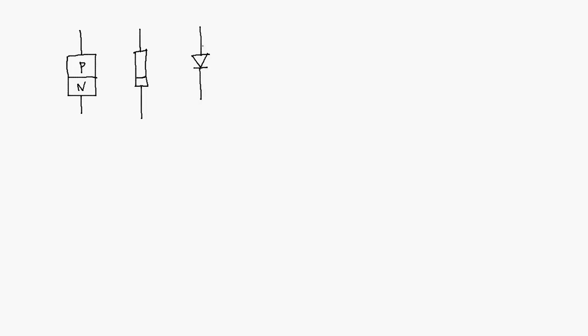The circuit symbol for a diode looks like this. This side of the circuit symbol represents the same side as this side of the actual diode and this side of the cartoon P-N junction representation. This side of the diode is called the anode, on the P-side material, and this side of the diode is called the cathode. The shape of the circuit symbol sort of represents the behavior of the diode, in that this is like an arrow pointing in this direction to indicate that conventional current is only allowed to flow in this direction.